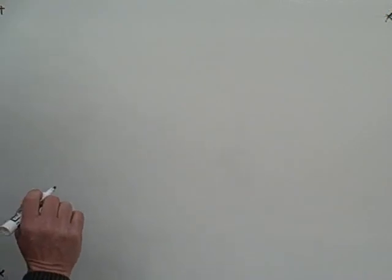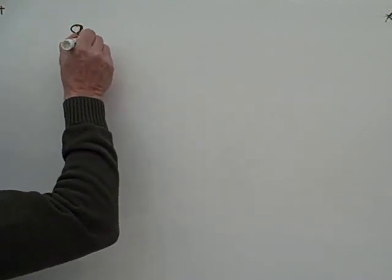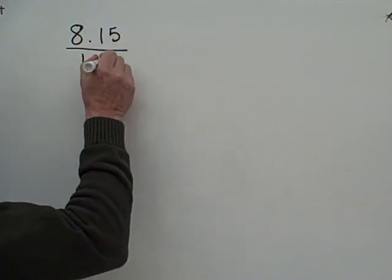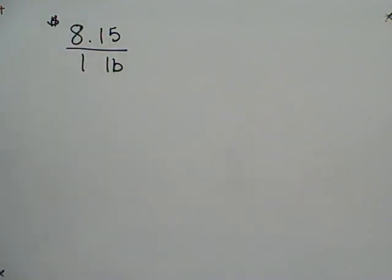Today I want to show you how to convert a cost per as-purchased amount of meat, such as $8.15 per one pound. So it's costing you $8.15 for a pound of turkey or roast beef or whatever.